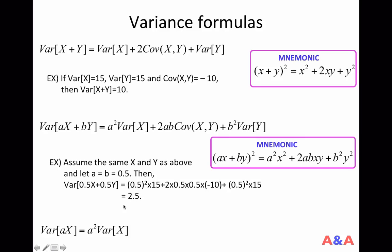A special case is when b is 0. When b is 0, this formula implies that the variance of a times x is equal to a squared times the variance of x — it's not just a times the variance of x. It's a squared times the variance of x. Don't forget this a squared.